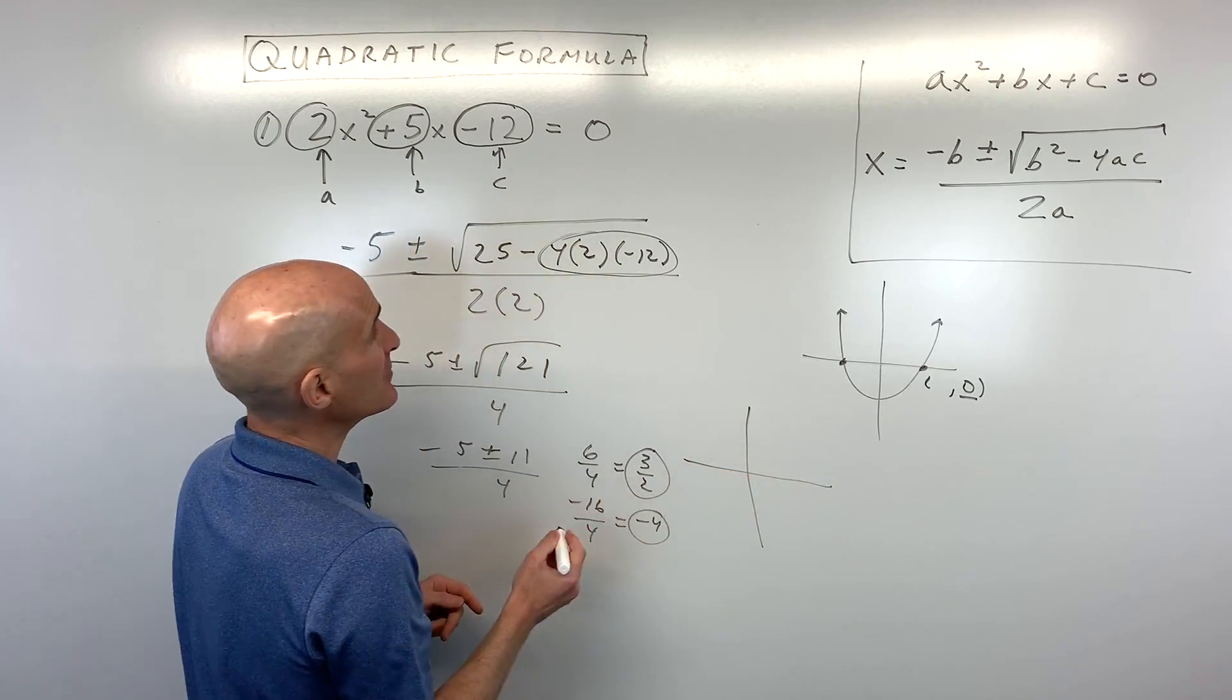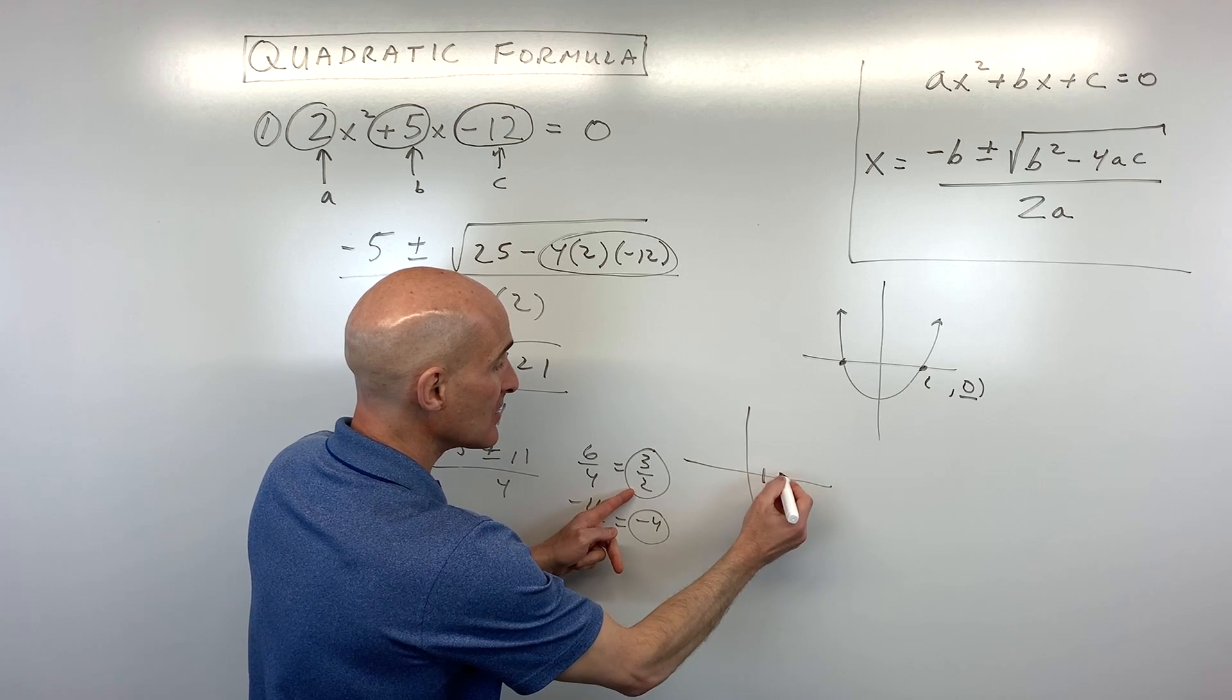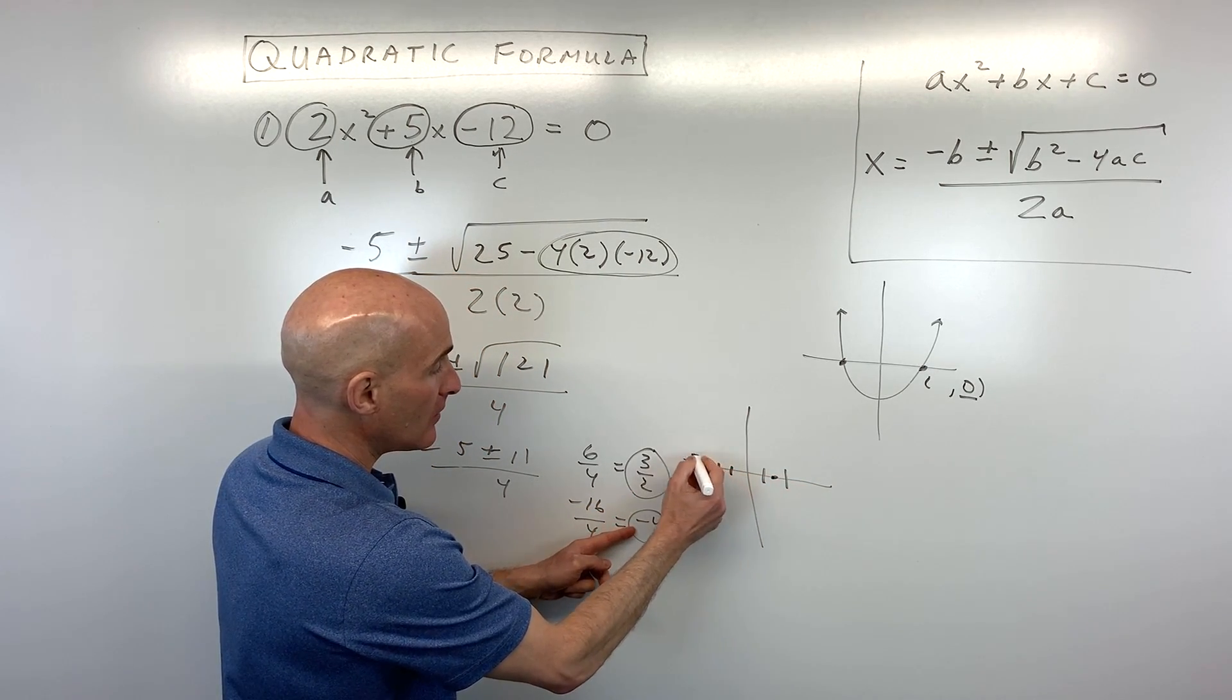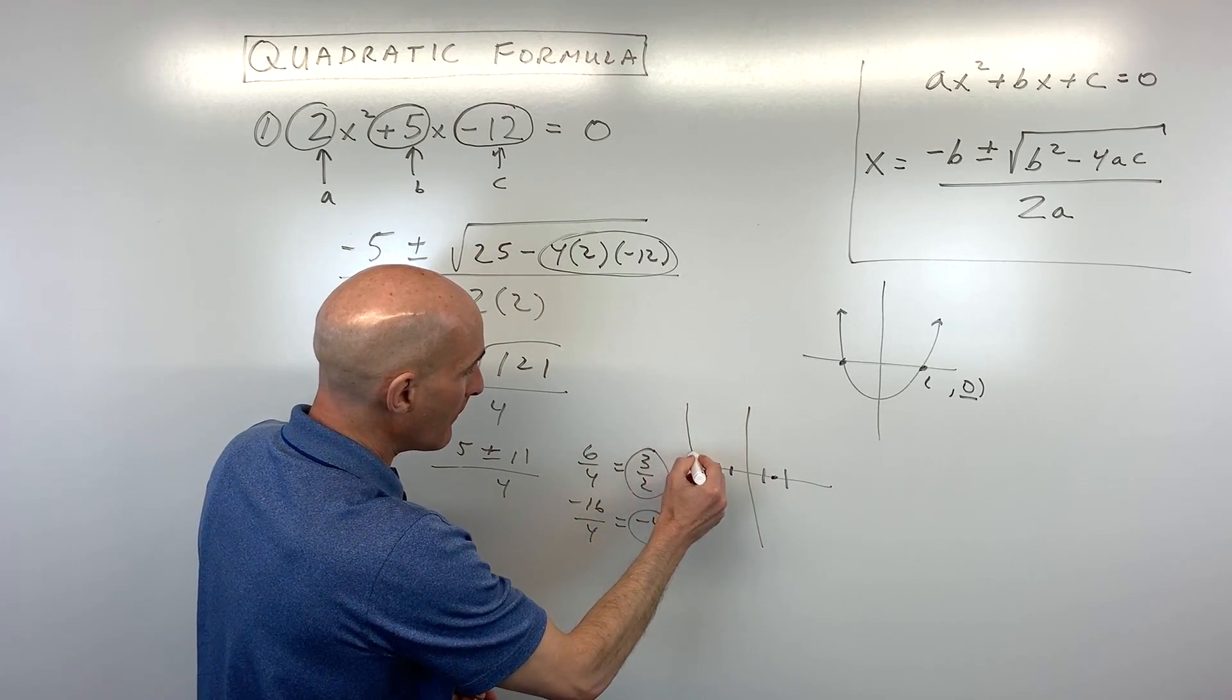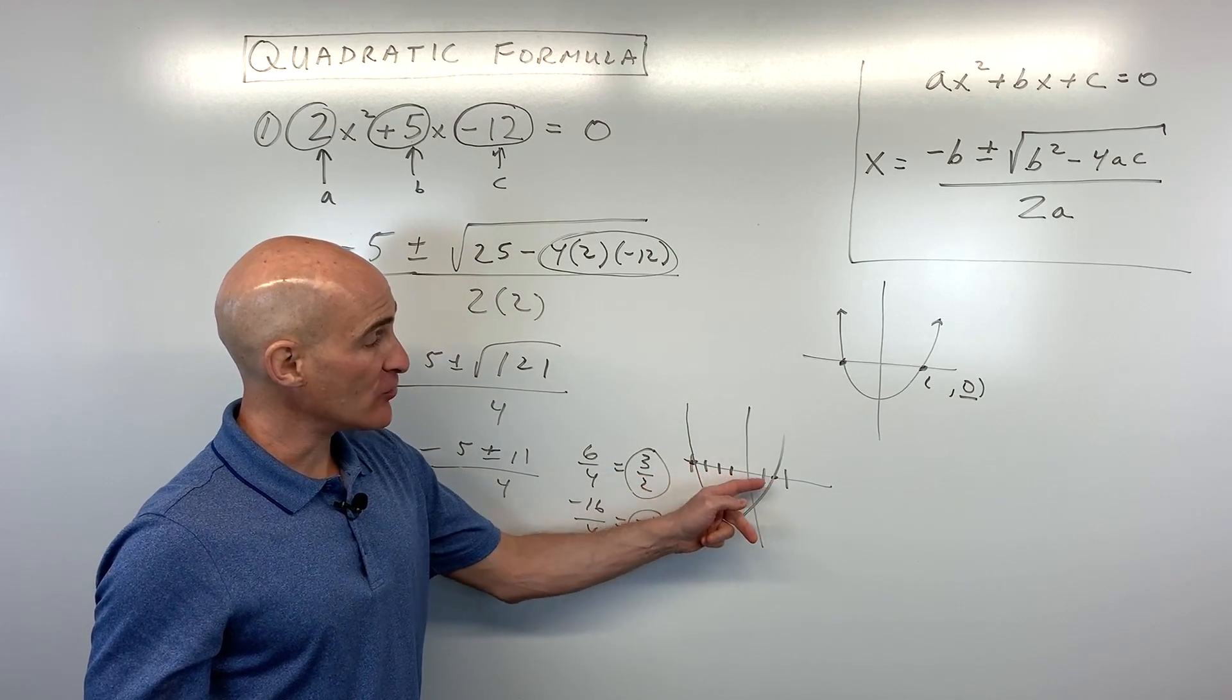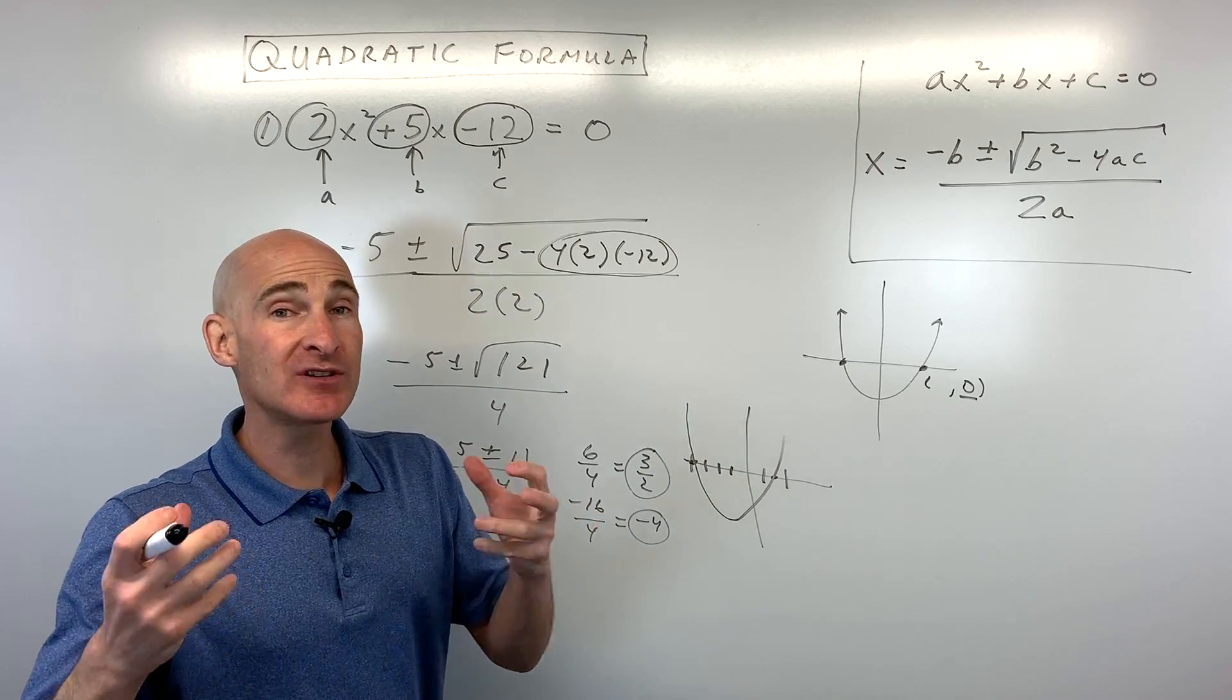Now what does that tell us? It tells us that this parabola, this quadratic here, is crossing the x-axis at 3 halves, which is like 1 and a half, and at negative 4. And we know that a is positive, so we know this graph is going to be opening up. But the main point is to find those x-intercepts, those zeros, and we did that by using the quadratic formula. Let's look at another example.